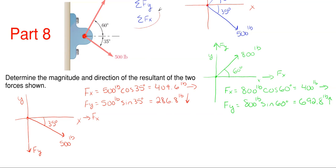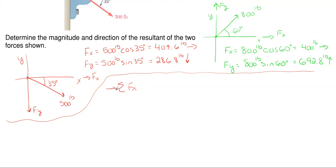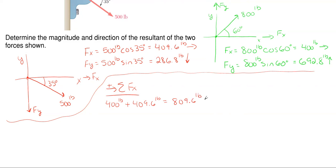We are going to sum them together in each direction to find out what we have. For the summation of the x direction, we take everything acting to the right as positive and everything acting to the left as negative. We have 400 acting to the right (plus 400 pounds) and then for the 500 force we have 409.6 acting to the right — also positive. The total gives me 809.6 pounds acting to the right.